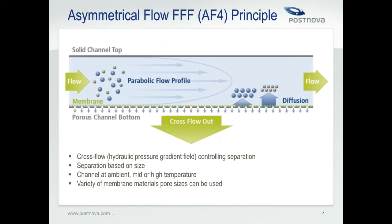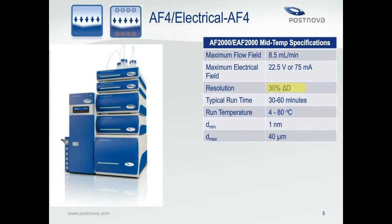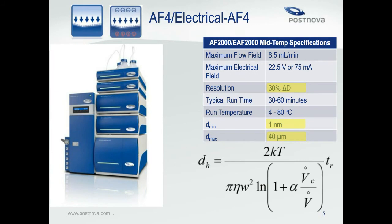One specific subtype of FFF is asymmetrical flow FFF, often referred to as AF4. It's a very versatile technique that separates by size from about one nanometer up into the micron range. The field is what we call a cross flow field, generated by pumping liquid across a membrane on the channel bottom. During elution, we have two flows: the channel flow and the cross flow. Smaller particles can more readily diffuse across the cross flow into faster flow profiles and elute to detectors earlier than larger particles. AF4 can separate particles with about a 30% or greater difference in size, from about one nanometer up to the low micron range. FFF theory has been well studied and we can accurately relate the retention time to a hydrodynamic size if separation parameters such as temperature, channel dimensions, and flow rates are well known.